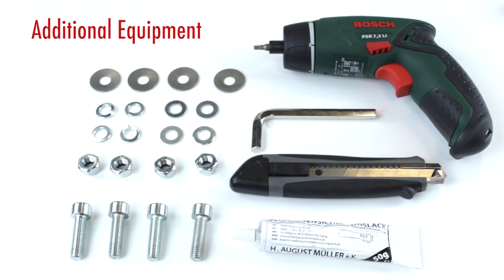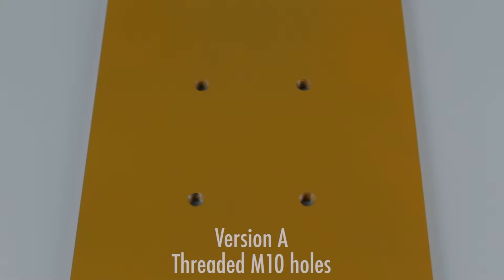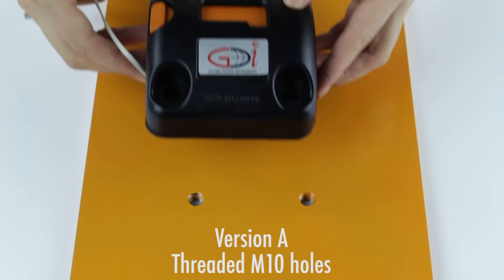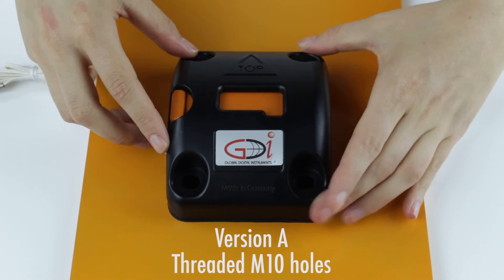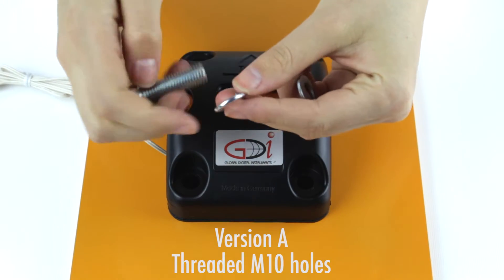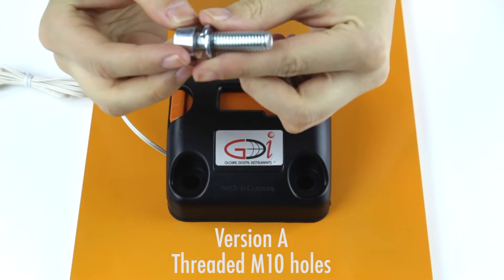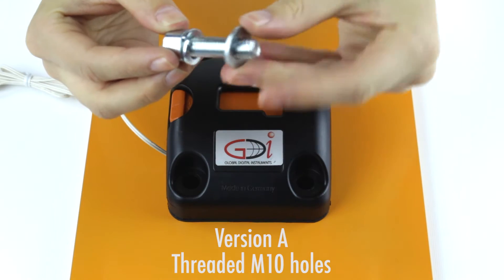You may need the following products additionally, depending on your specific conditions. Version A: Drill a thread into your attachment for the screw size of M10. Add the disc washer and then the lock washer to the screws and lock them very tight.